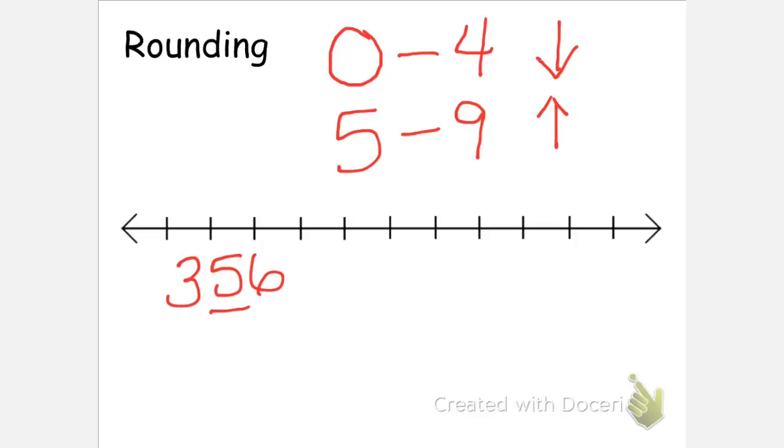So for example, if you have the number 356 and you want to round that to the tens place, that would be the number 5. We would look at that 6, and since it's between 5 and 9, we would round that number up to 360.